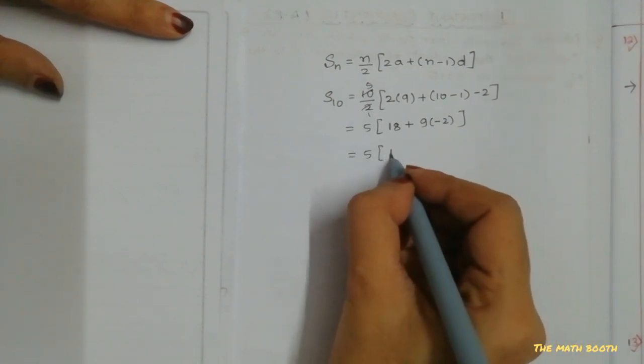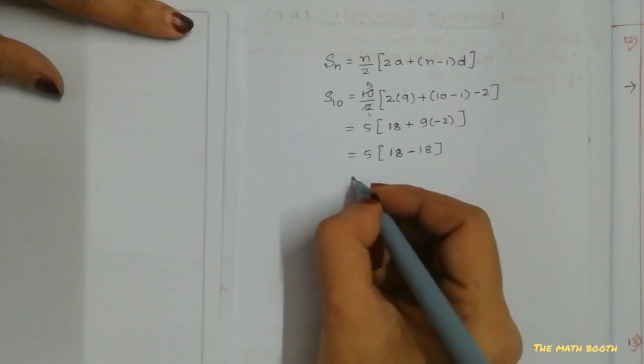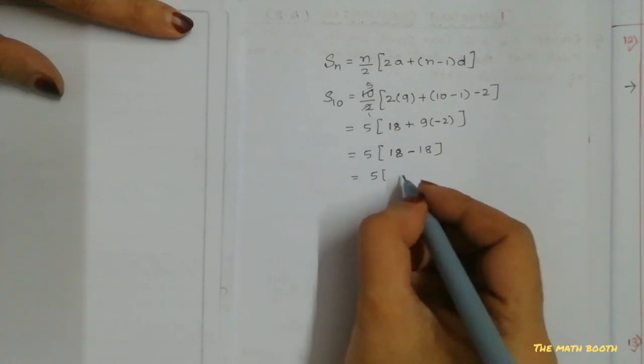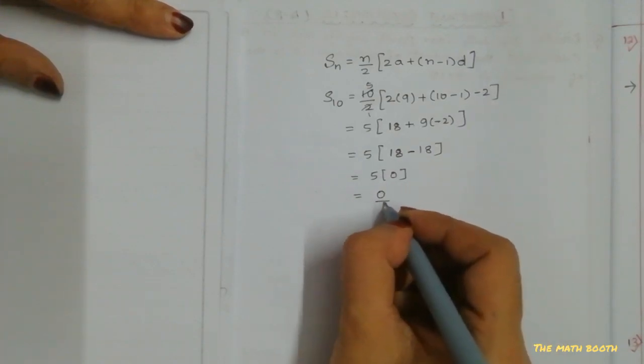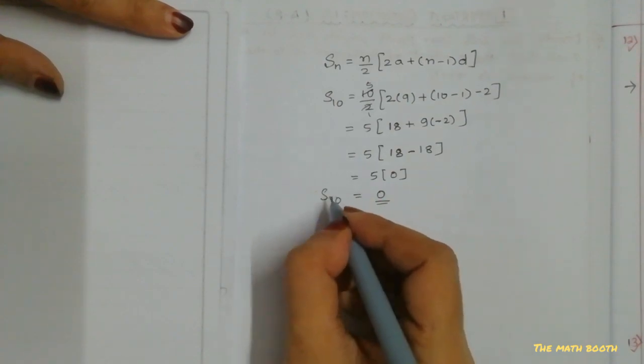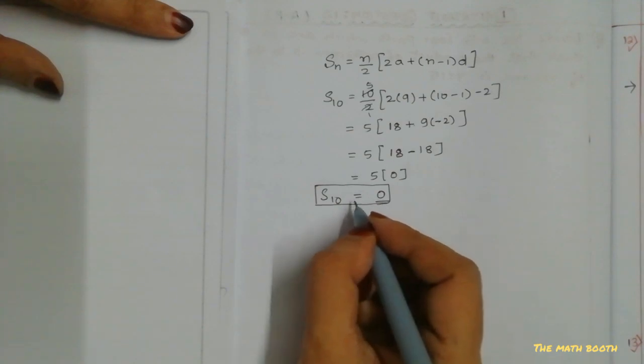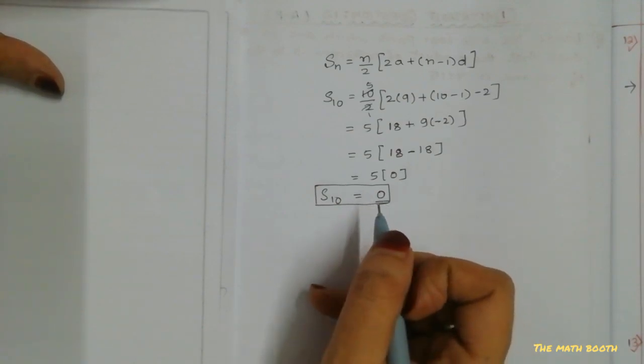So 18 plus minus, minus: 9 times 2 is 18. So 5 into 18 - 18 is 0, and any number multiply by 0 is 0. So sum of 10th term is 0. So sum of 10th term is 0. So this completes question number 13.